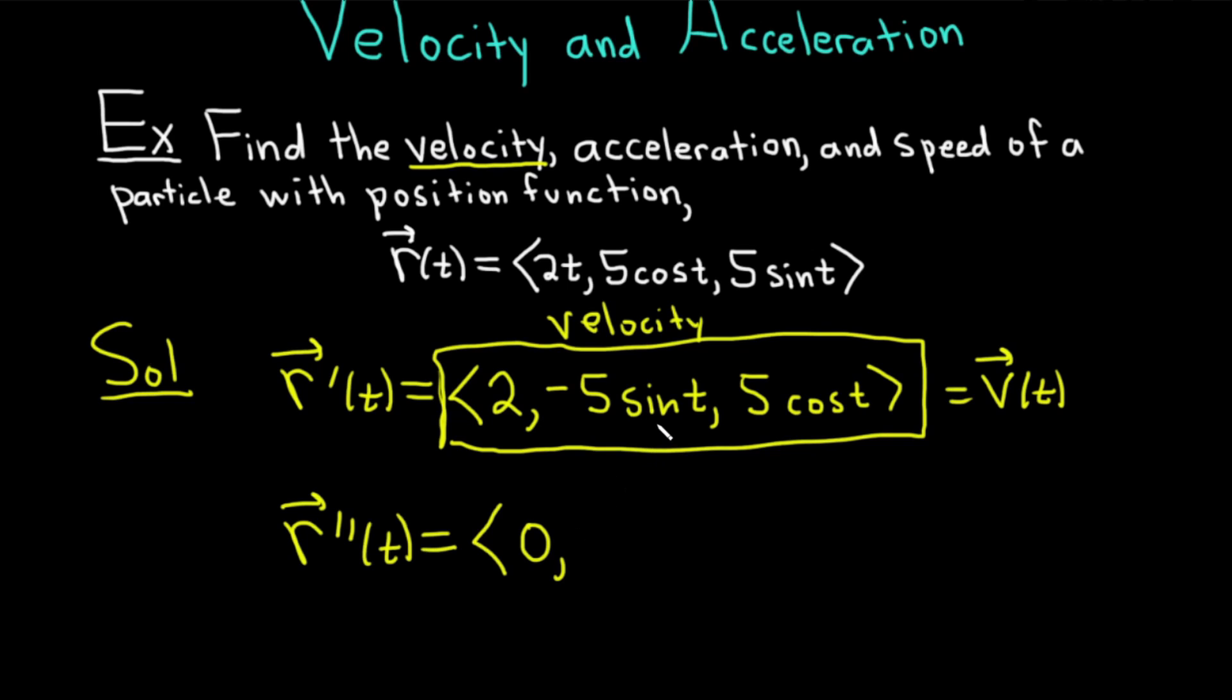The derivative of 2 is 0 because it's a constant. When we're differentiating sine, we just get cosine. So we just have -5cos(t). And the derivative of cosine is negative sine, so this is going to be -5sin(t).